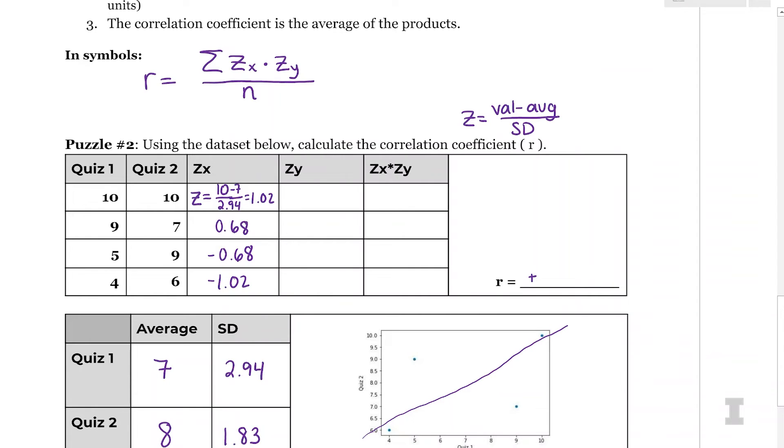For the Y's, we would do the same thing. Quiz two, our first score is 10. So that's our value. Our average for the Y's is 8. And then my SD is 1.83. So 2 divided by 1.83 is 1.09. 1.09. And then we have 7 minus 8. So negative 1 divided by 1.83. That is negative 0.55. Negative 0.55. And then we have 9 minus 8. So positive 0.55. And then we have 6 minus 8. So negative 2. So negative 1.09. So we have all of these z-scores.